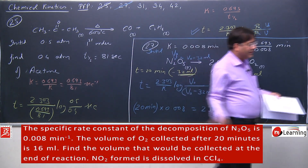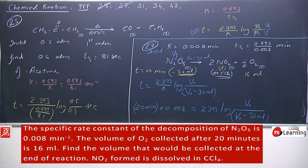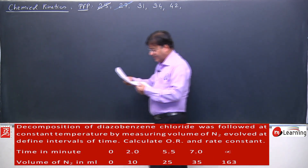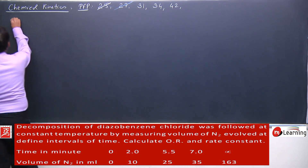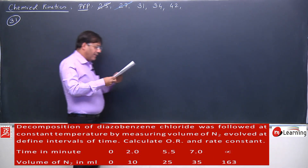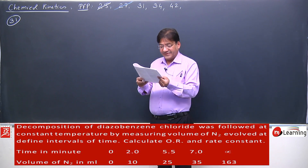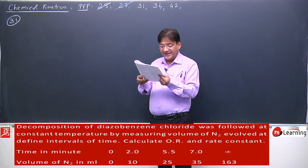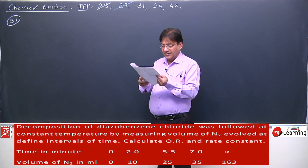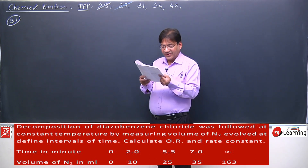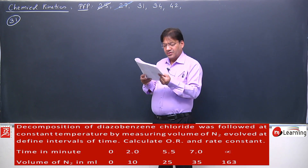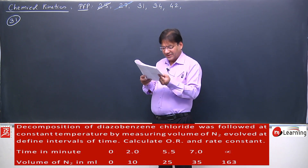Now let us move on to the 31st problem. Decomposition of diazo benzene chloride was followed at constant temperature by measuring the volume of N2 evolved at definite intervals of time. We need to calculate the order of reaction and the rate law constant. Time and volume data are given.